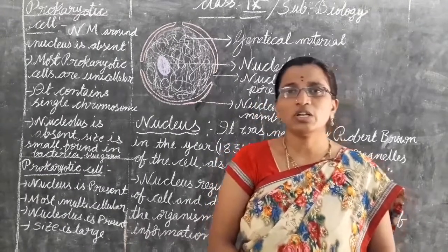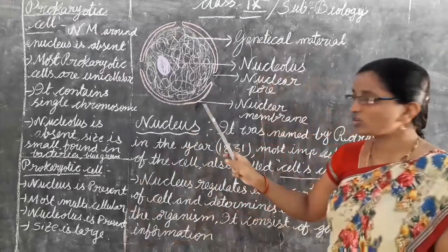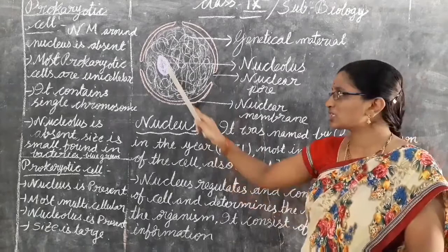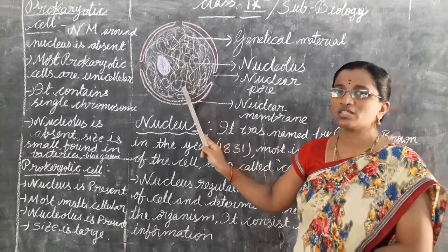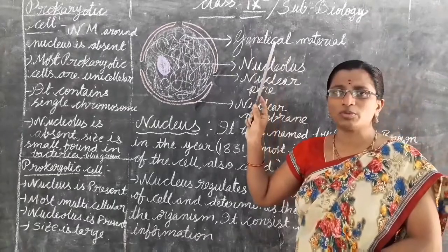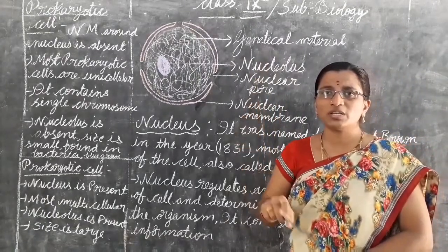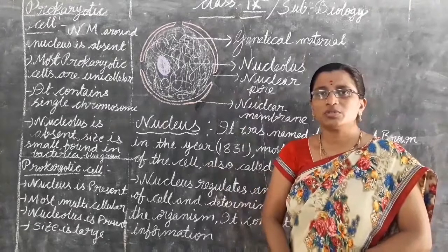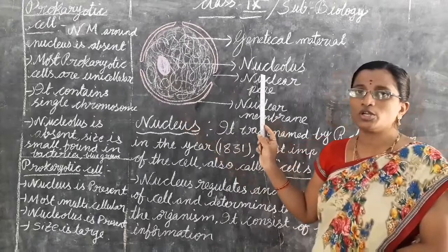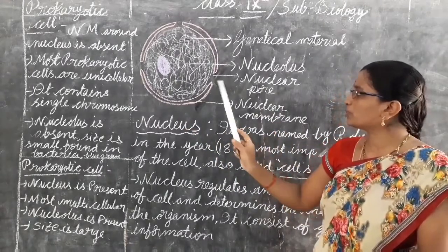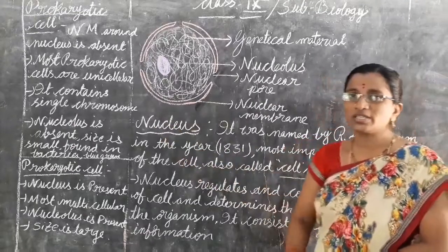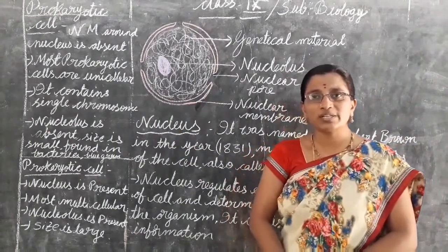Today's video we will learn about the structure of the nucleus and the important parts present in it. A thread-type structure is there, which we call genetic material. Through this genetic material, the genetic information from parents is transferred to their offspring. A round structure is present called the nucleolus, and the outer membrane is called the nuclear membrane.